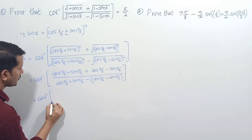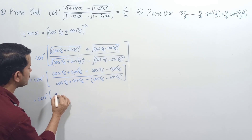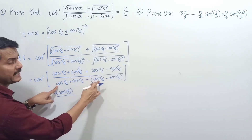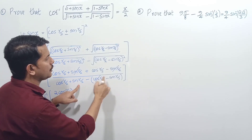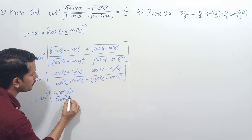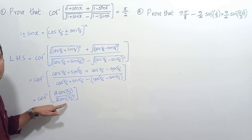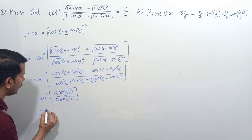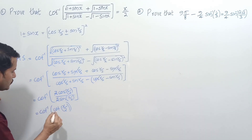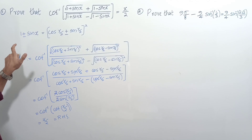So the numerator is 2·cos(x/2) — the sin(x/2) terms cancel. The denominator: minus of minus becomes plus, so sin(x/2)+sin(x/2) = 2·sin(x/2). The 2s cancel, giving cot⁻¹(cos(x/2)/sin(x/2)) = cot⁻¹(cot(x/2)) = x/2, which is our RHS.